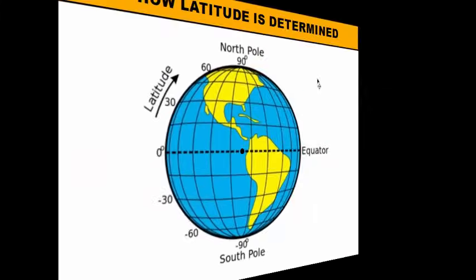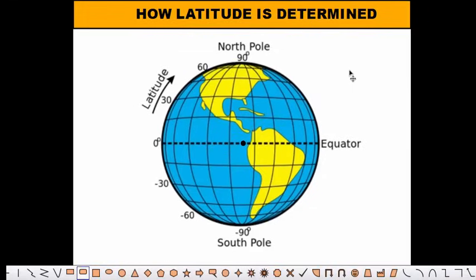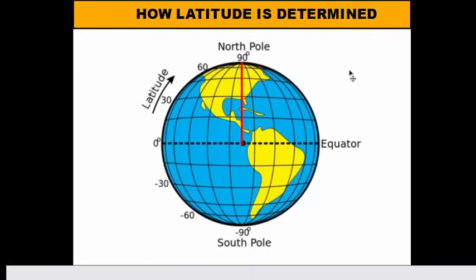Latitude lines are measured in degrees for a geometric reason. You take a line from the equator's center down to your position on earth and measure the angle it makes. At the north pole, that line makes a right angle — 90 degrees — so the north pole is at 90 degrees north.